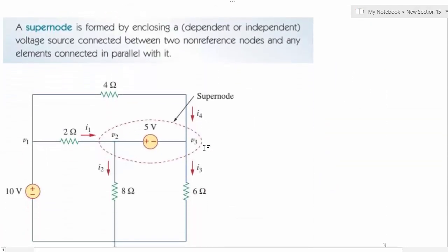Here we have enclosed the 5V source in a closed boundary and formed a super node. Now we apply KCL to the super node: current entering the node is I1, current leaving the node is I2, I3 is also leaving and I4 is leaving. So we have current entering equals current leaving. V higher minus V lower over ohms gives us each branch current.